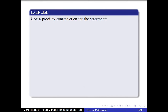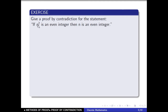The next result is an exercise: give a proof by contradiction for the statement — if n² is an even integer, then n is an even integer. We have this statement to prove using the contradiction method.